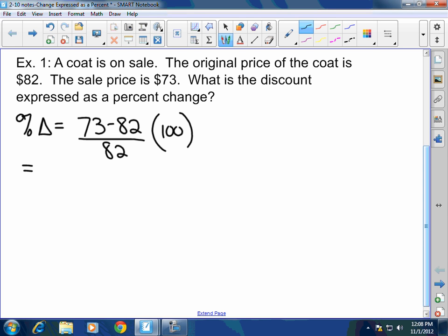So then, 73 minus 82. Please remember, when the signs are opposite, you subtract as normal. Keep the sign of the largest absolute value. So that's going to be negative 9 times 100 over 82, which is going to equal negative 900 over 82. Does that make sense, everybody?